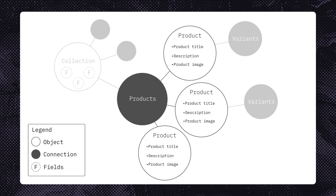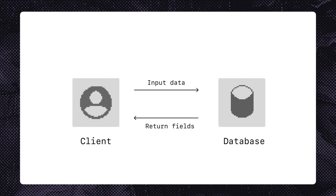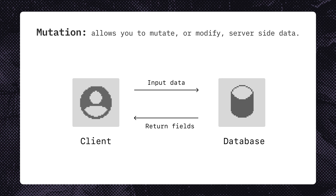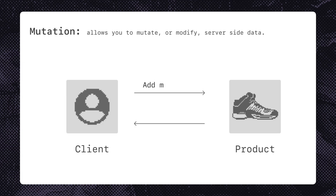Now let's look at how this works using a mutation instead of a query. Remember, mutation allows you to modify server-side data. Since launching the new shoe line, your client has been flooded with customers asking about whether the shoes are made of real leather. To address this, they've decided to update the entire product database to include a list of materials. Your input data here is to add a product metafield. This will then update the product itself and return the metafield ID.